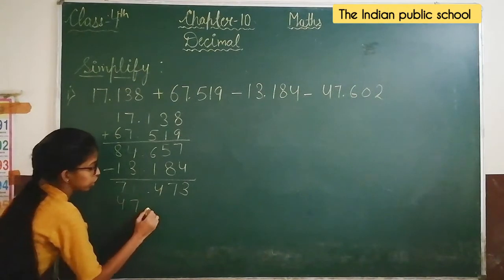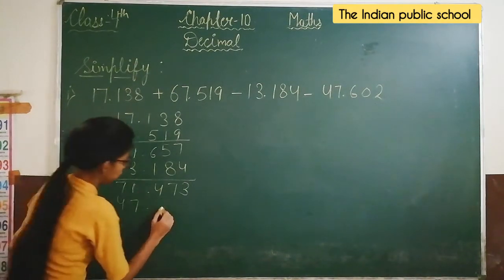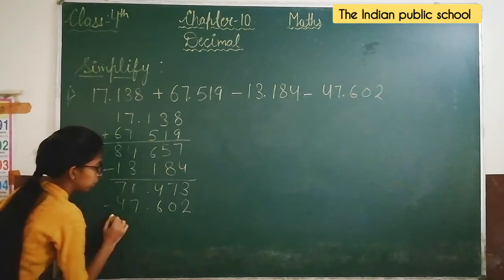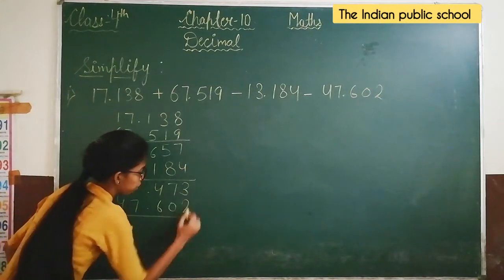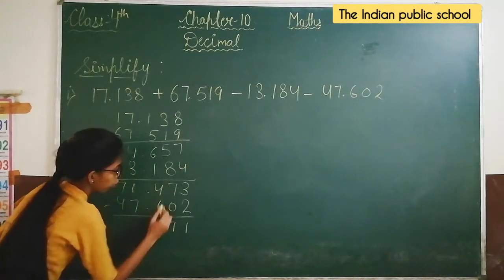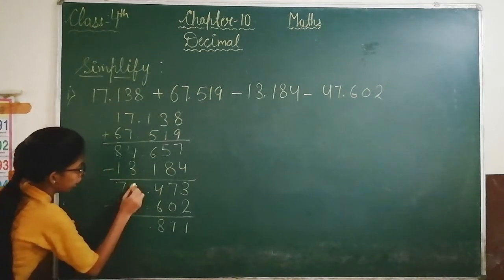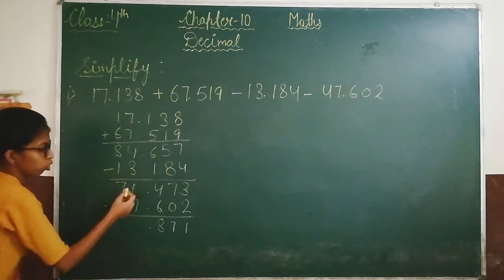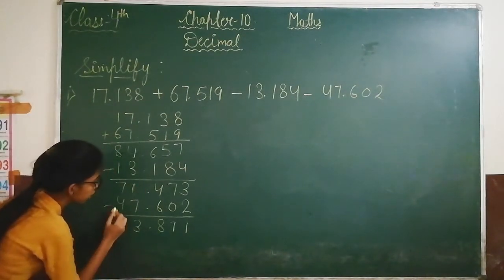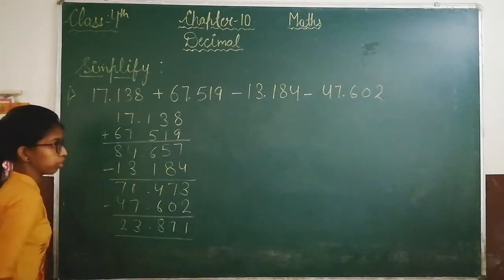The last number is also in subtraction. We will subtract 47.602. We will get: 40 minus 6 is taken with borrowing to give 8, here will be 0, 10 minus 7 is 3, 6 minus 4 is 2. This is your final answer.